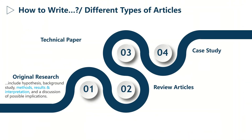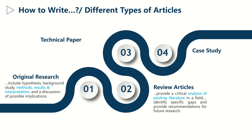The second category of articles is review articles. They are generally classified as secondary literature, given that they do not present new data from the authors. Instead, they mainly provide a critical and constructive analysis of existing literature.